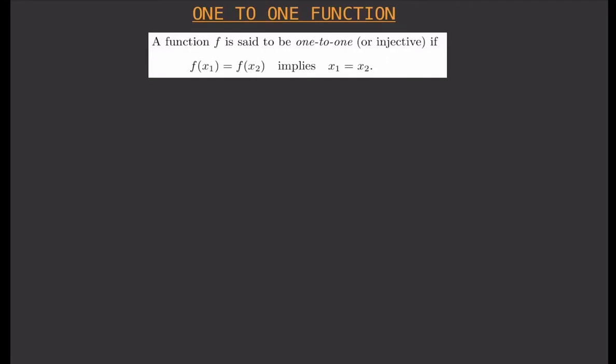So what is a 1-to-1 function? A function f is said to be 1-to-1 or injective if f(x₁) equals f(x₂) implies x₁ equals x₂. This means that for one value of y, you can only have one value for x.